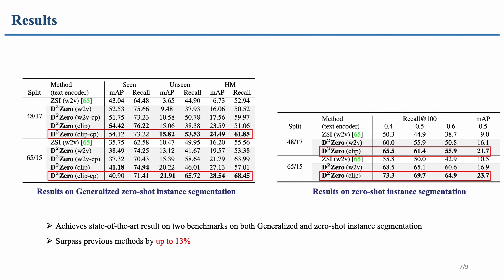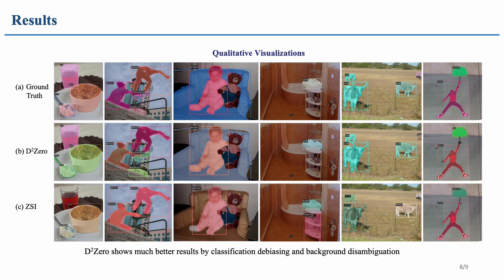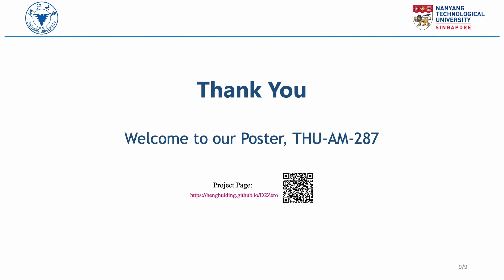Our D2-0 achieved state-of-the-art performance on both generalized zero-shot instance segmentation and zero-shot instance segmentation, with a significant improvement of 13 percent over previous methods. For qualitative visualizations, D2-0 shows much better results than baseline methods and can successfully segment objects like sofa, snowboard, and so on. Thank you for listening. If you are interested in our work, you can visit our project page for more detailed information and come to our poster.